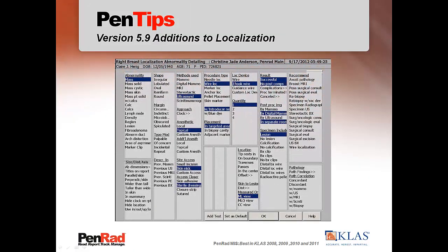Localization detailing additions in version 5.9 include the ability to indicate in the report the approach by clock position lesion to lesion. Also added is the ability to specify methylene blue dye was injected for the surgeon.